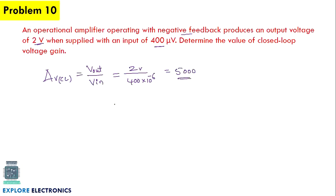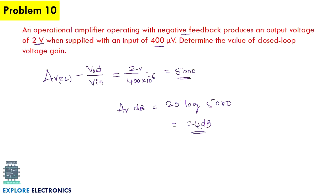If we want to represent this in dB, voltage gain is represented as 20·log(Av). So 20·log(5000) gives 74 dB. This is how voltage gain is expressed in decibels.